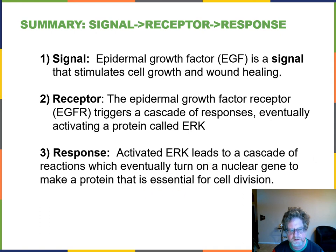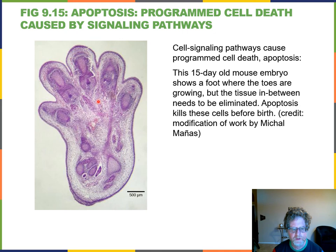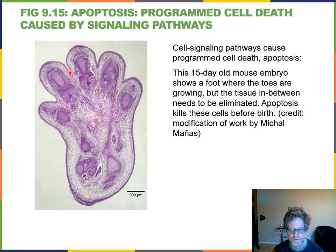Another exercise asks you to identify the signal, receptor, second messenger, the enzyme doing intracellular signaling by phosphorylation, and the response. Here's an example of mouse foot development: the areas between the toes are eliminated by pre-programmed cell death called apoptosis. Signaling messages tell those cells to kill themselves so there are spaces between the toes. Cell signaling pathways can therefore cause programmed cell death, which is very important for correct development.